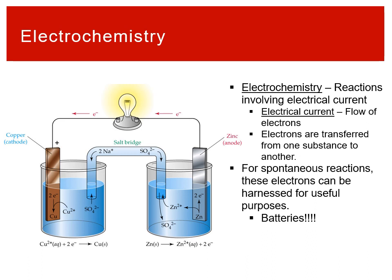For spontaneous reactions, if that flow of electrons can be harnessed, we can use it to light up light bulbs, power phones, and more. This reaction setup shown here is called a cell — the basis for batteries — where a spontaneous chemical reaction drives the flow of electrons in an enclosed system.